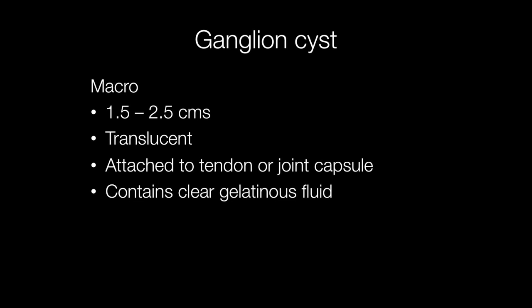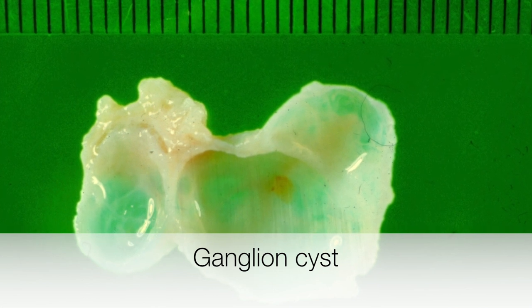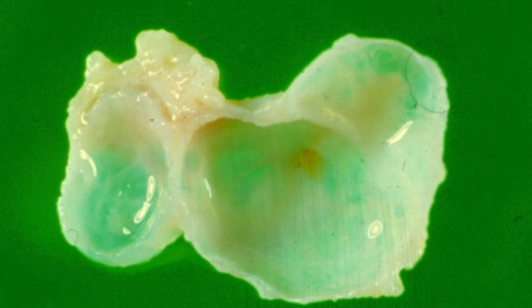The typical size of a ganglion cyst is 1.5 to 2.5 centimeters across. They are semi-translucent cysts because they contain clear gelatinous fluid and they are attached to the tendon or joint capsule. This is the gross appearance of a typical ganglion cyst, which is basically a lump of fibrous tissue containing multiple translucent cystic spaces.